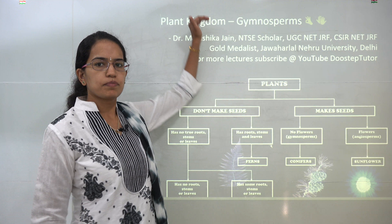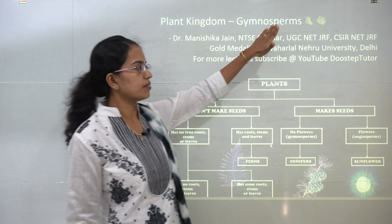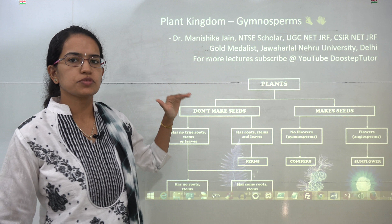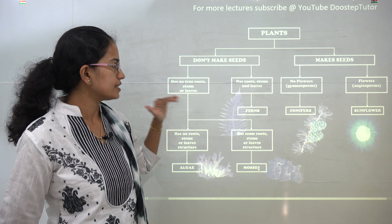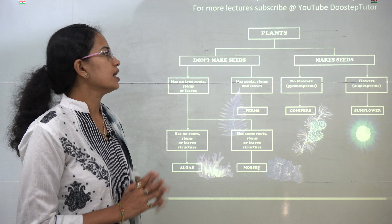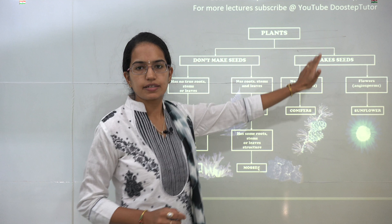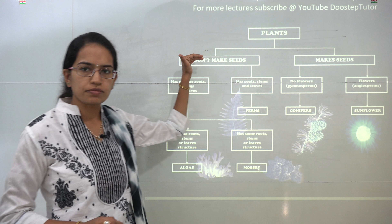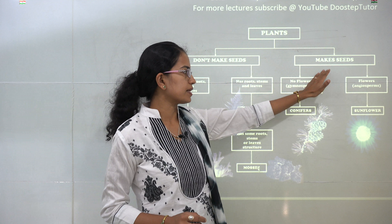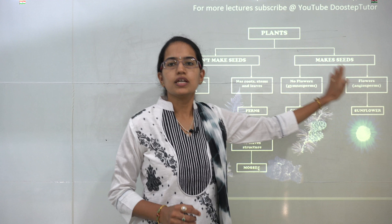Welcome. We will start with the plant kingdom. The first kingdom we would be talking about is gymnosperms. Before we start with gymnosperms, let's have a brief idea about the plant kingdom. Under the plant kingdom, we talk about plants that make seeds and those that do not. The plants which make seeds can be classified as gymnosperms or angiosperms.